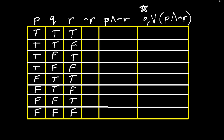We will begin inside the parentheses first, obtaining the truth values for not r. For these truth values we just need to take the opposite of what is already in the r column. So for the first line when r is true, not r (the negation of r) is false. When r is false, the negation is true, and so forth.